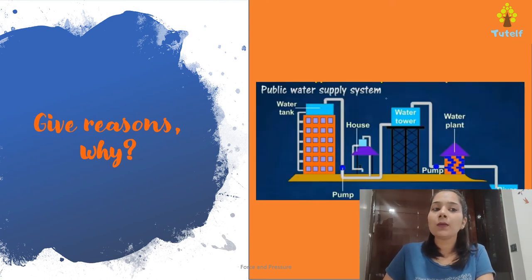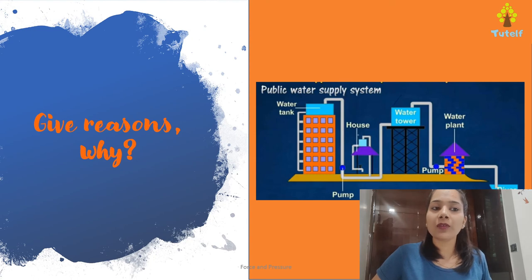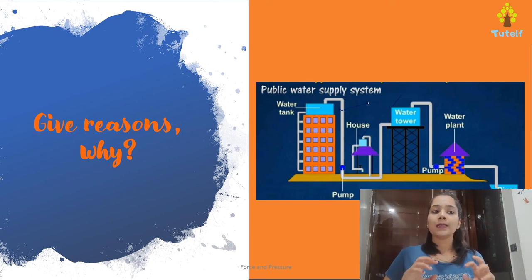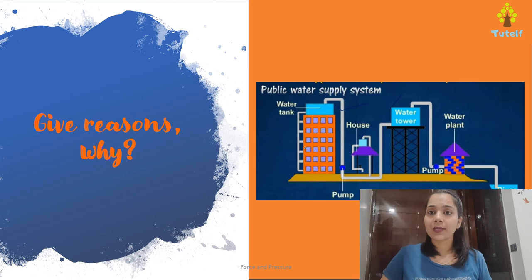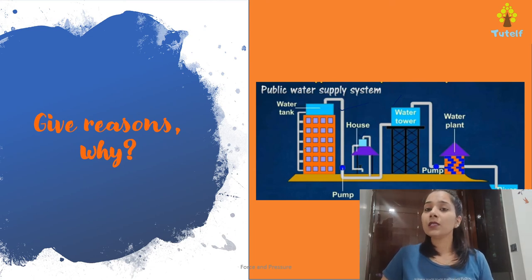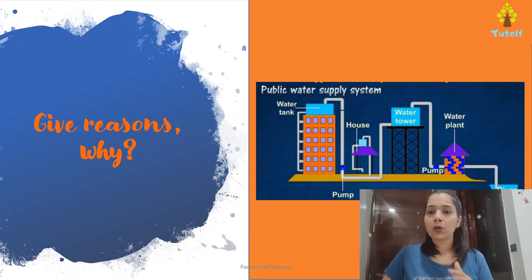In public water supply systems, the water tank is placed at the top of the building. At a greater height the pressure is high, and water flows from high pressure to low pressure, allowing it to reach the taps. If the water tank were placed at the base of the house, the height would not be there, the pressure would be very low, and a pump or generator would be needed to move the water up. Placing the tank at the top allows domestic use without any pump.